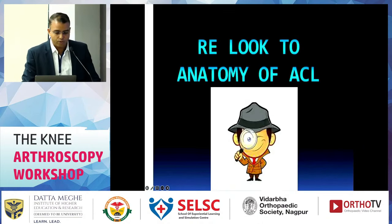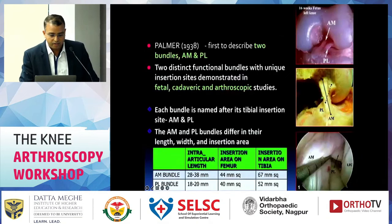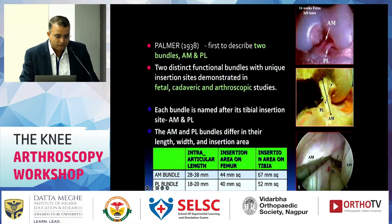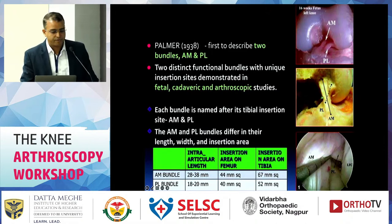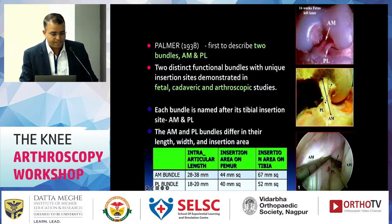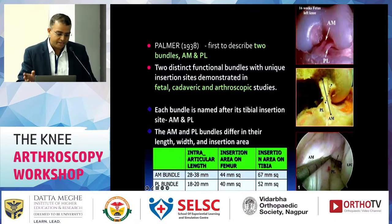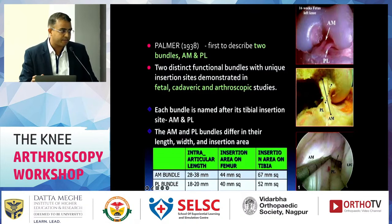Re-examining the anatomy: the ACL is divided into two bundles — anteromedial and posterolateral. Each bundle is named after its tibial insertion site. The anteromedial and posterolateral bundles differ in their length, width, and insertional area. In every aspect, the anteromedial bundle is larger and wider than the posterolateral bundle.